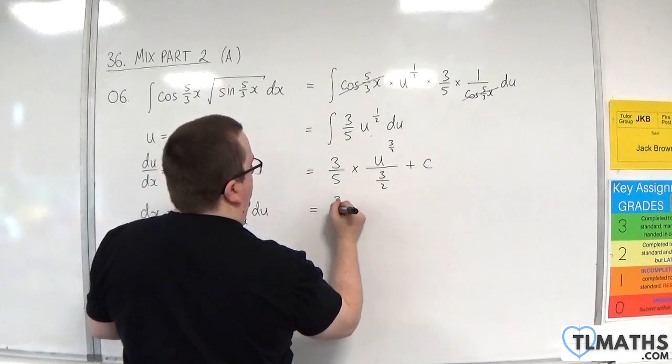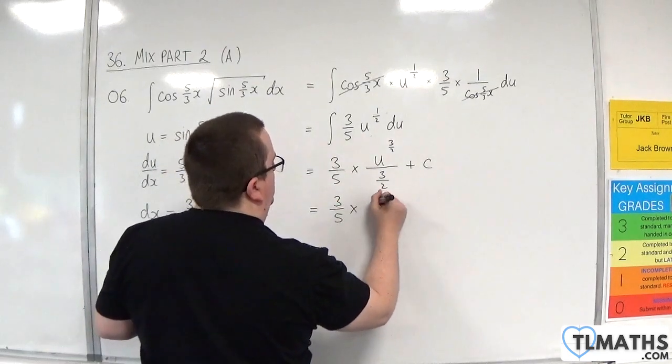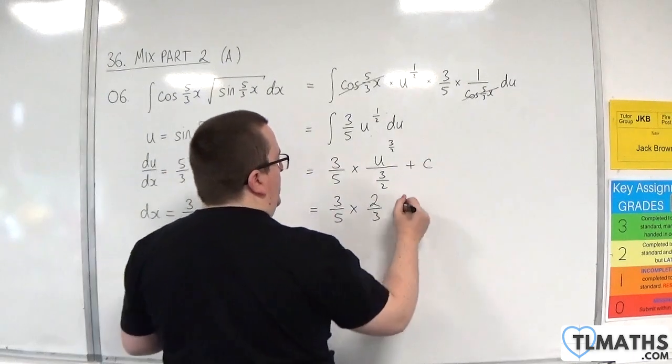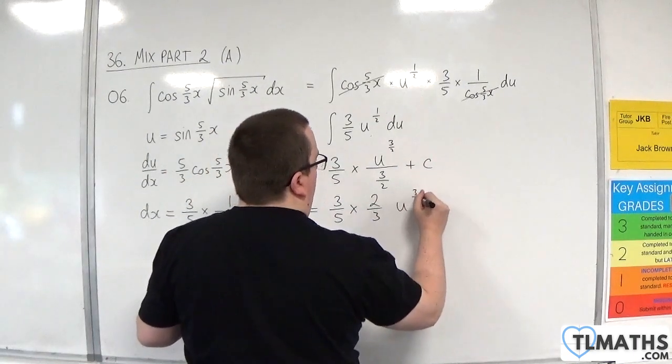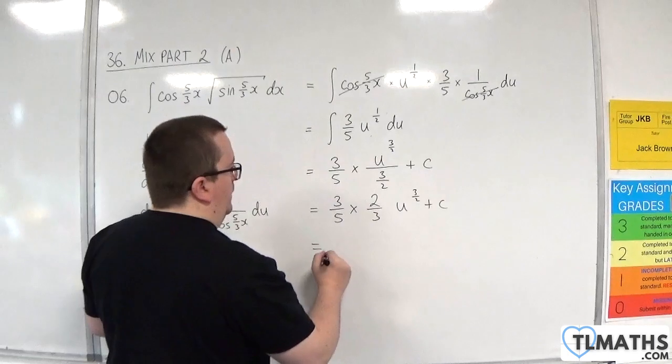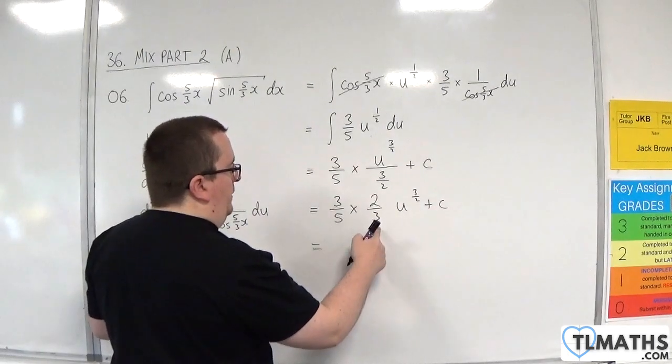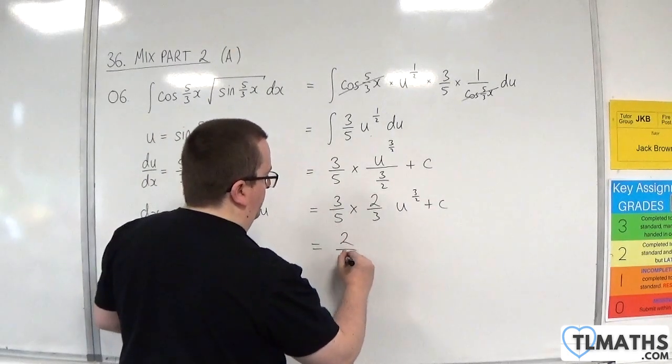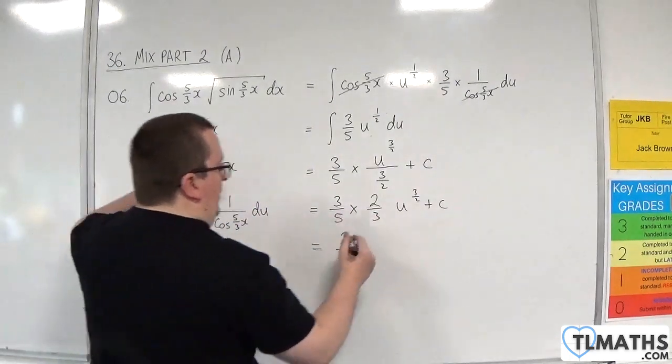So 3 fifths times by 2 thirds. Because dividing by 3 halves is the same as multiplying by 2 thirds. u to the 3 halves plus c. 3 fifths times 2 thirds is 2 fifths.